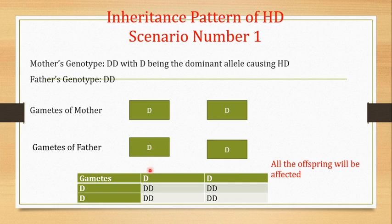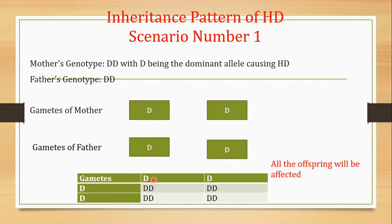If you make the Punnett square, the outside of the square shows the gametes — capital D and capital D for the mother, and capital D and capital D for the father. The interior of the Punnett square shows the fertilized products. Each combination gives an offspring with genotype capital D and capital D. All four boxes give capital D capital D, meaning all offspring will be affected.